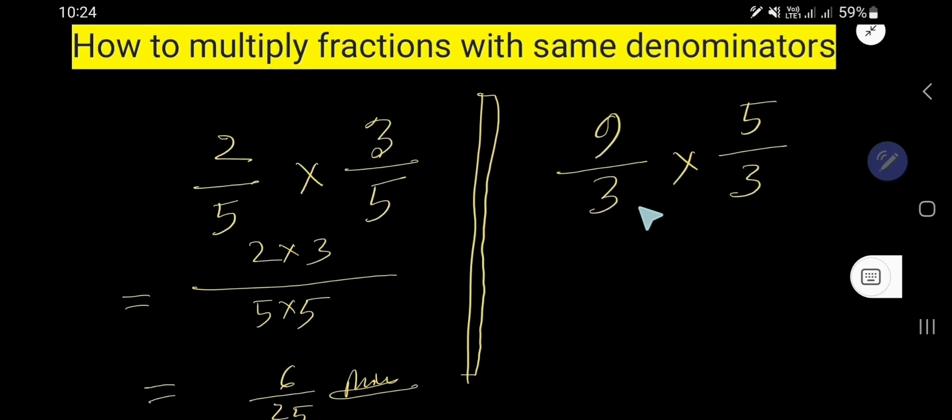Here is another example. The denominator of this fraction is 3 and the denominator for this fraction is 3. So we have the same denominators.